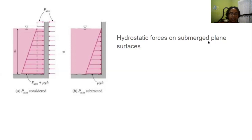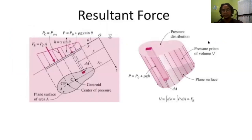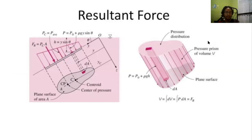The pressure — as you can see — the atmospheric pressure at point A is considered and at point B is subtracted, because we assume there is no atmospheric pressure. So it is only rho·g·h. Then we go to the resultant force. For the resultant force, we want to find the center of pressure and the centroid of the area, using the equations shown, so that the dam will not have any failure.